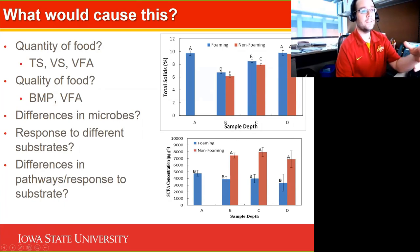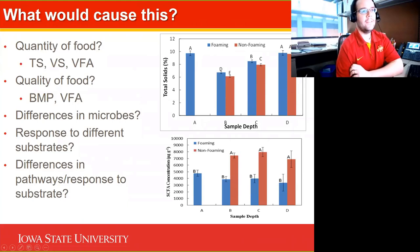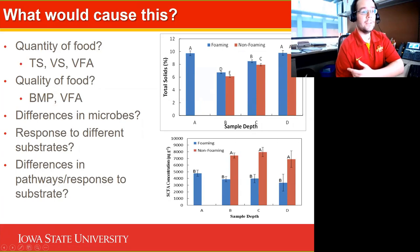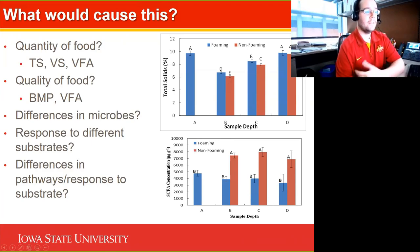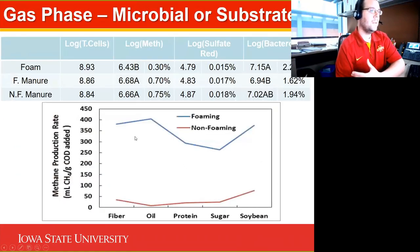I have two graphs on this slide. The first shows total solids — blue bars are samples from a foaming barn, red bars from a non-foaming barn — across four layers: A is the foam itself, then B, C, and D represent increasing depth from the surface to the bottom of the storage. We do see a little difference in solids content near the surface, but those differences are quite small. On the other hand, volatile fatty acid data showed higher VFAs in the non-foaming manures.